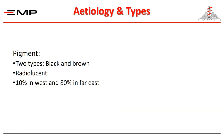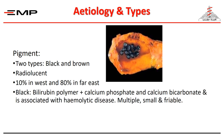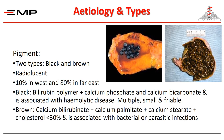Pigment stones are composed of bilirubin pigments and are either black or brown. These stones comprise the majority of stones in the far east. Black stones contain no cholesterol and therefore are pure pigment stones. Their presence, especially in children and teens, must raise the suspicion of a congenital hemolytic disease. Brown stones resemble mixed stones in the fact that they contain cholesterol in addition to the pigment and are associated with bacteria.